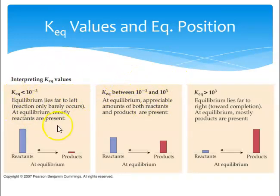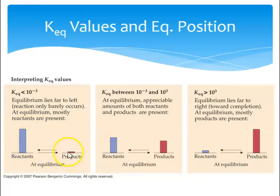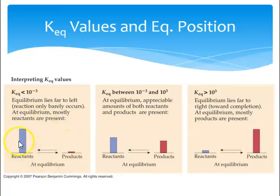How big or small does K_eq have to be for it to lie left or right? If K_eq is less than 1/1000, that means we have mostly reactants and not a lot of products — a little bit reacts, you make a tiny bit of product, but that concentration is high enough for the reverse reaction to have the same rate as the forward reaction. That's what equilibrium is — equal rates, not equal concentrations. A small K_eq value means reactant-favored. If K_eq is over 1000, you have mostly products.